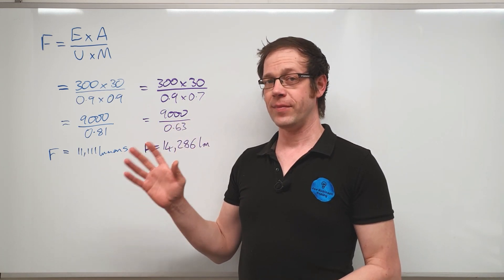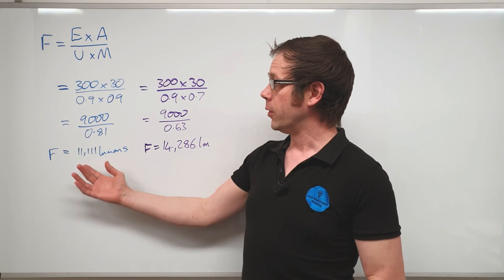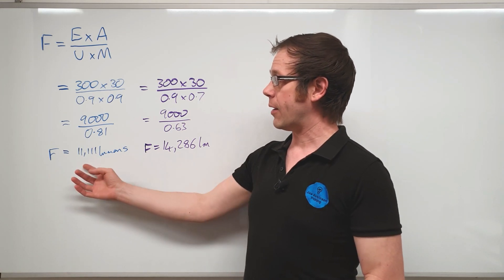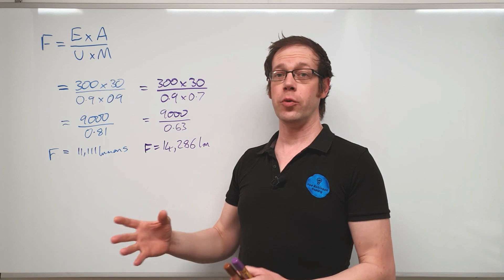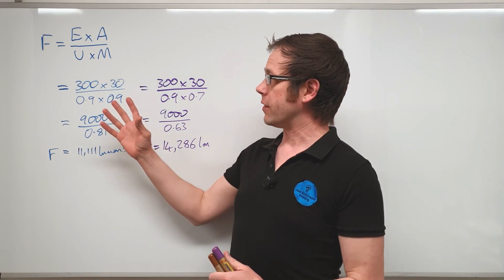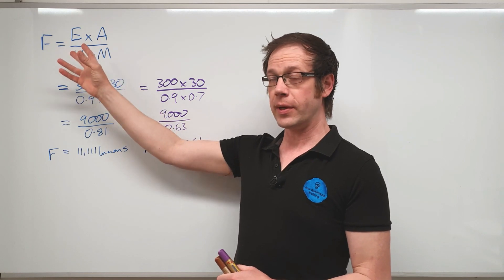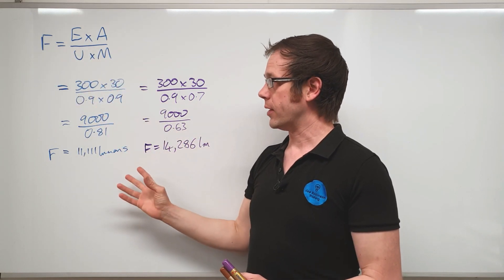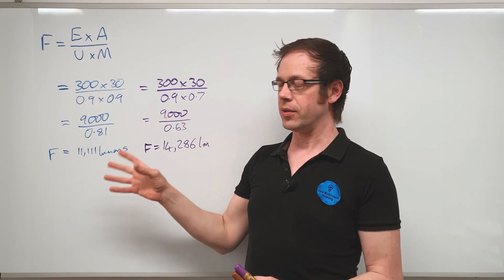You may remember from that video we looked at the way to calculate how many lumens were required to bring the light level in a room to a certain value. We looked at the different components of this formula and we did some example calculations and saw what happened when we changed and tweaked that a little bit.